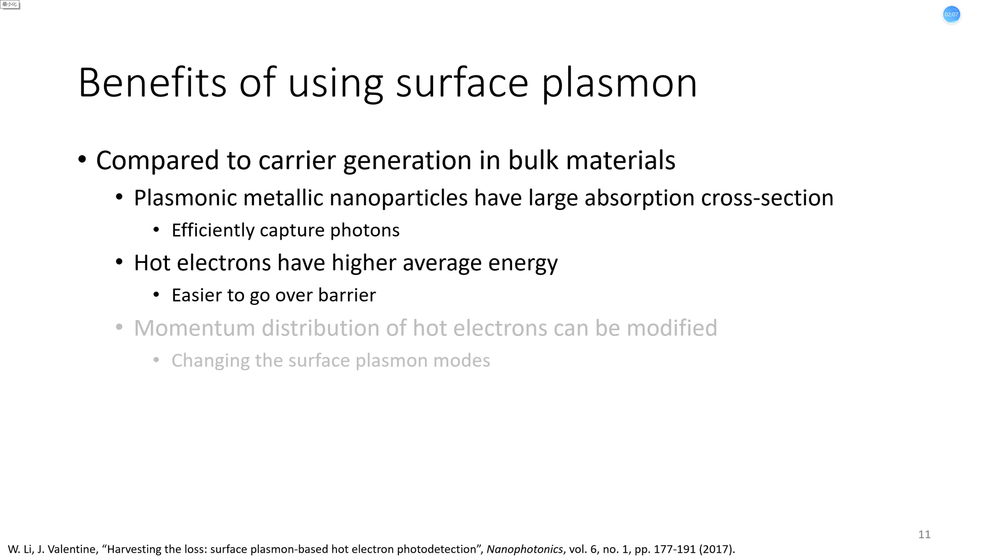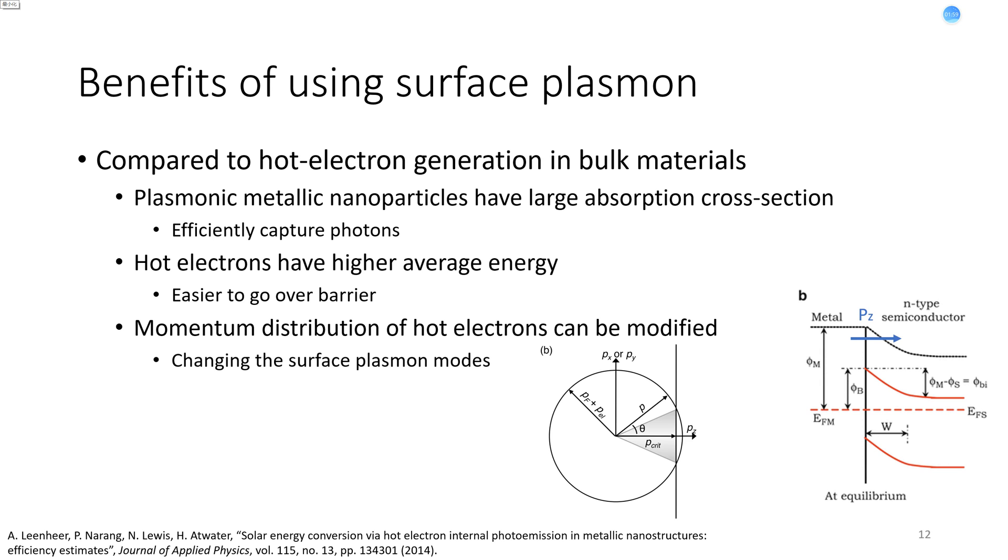The second benefit is that plasmon-induced hot electrons have higher average energy, making them easier to go through Schottky barrier. The last thing is that, only electrons with enough momentum in certain direction can go through barrier. For example in this figure, the momentum in Z direction, denoted as PZ, should be large enough. If the momentum of electrons have some uniform distribution among all directions, then only a small portion of electrons are useful. However, by tuning the surface plasmon modes, people can modify the momentum distribution, and make the whole process more efficient.